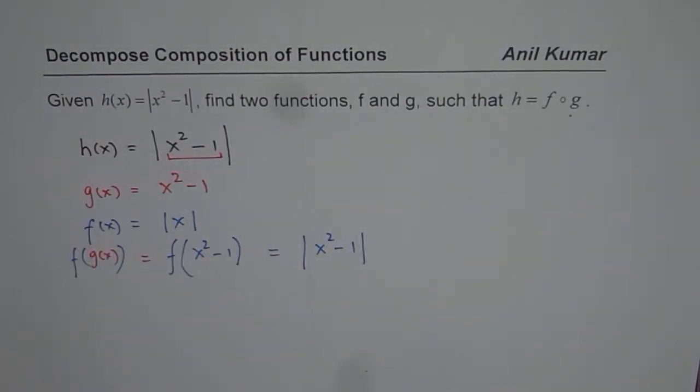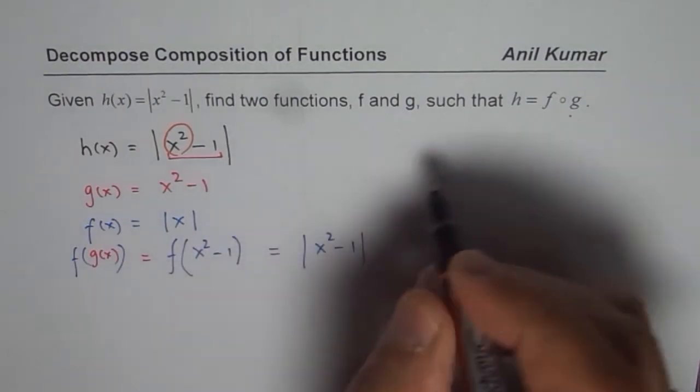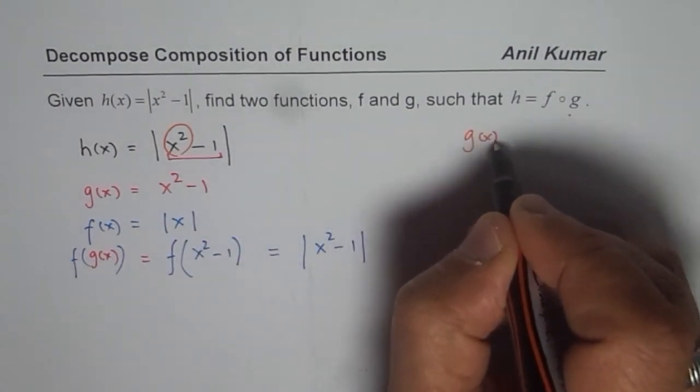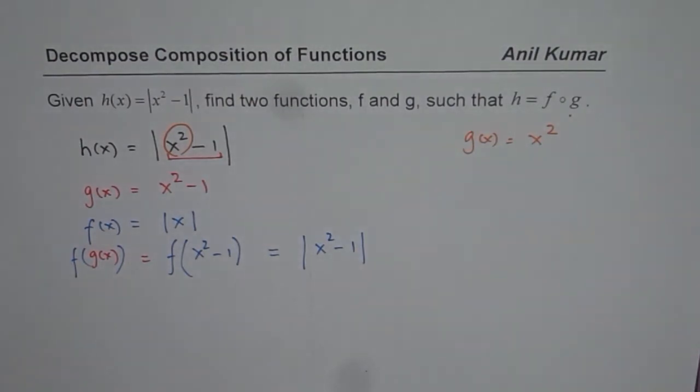There are a couple of ways we can do it. We could also think about g of x as just x square. So if I take g of x as equals to x square, in that case, can you tell me how can I write f of x?